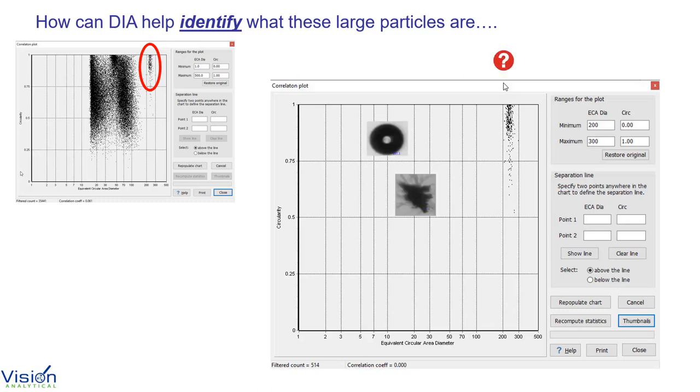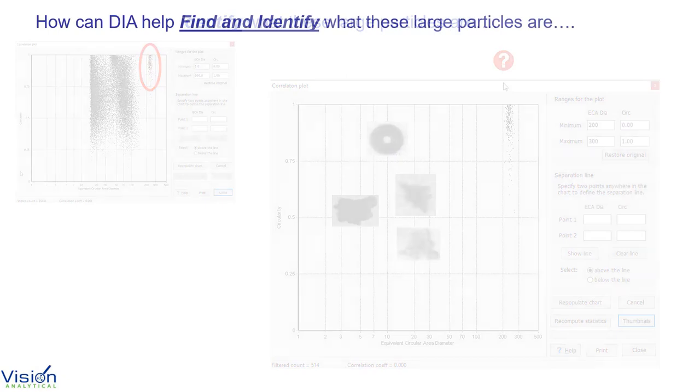Again, are they bubbles? And I don't have to worry about it. Are they agglomerates? Are they delamination of my tubing? Or are they contaminants? We need to know to find and to try to identify what they are.